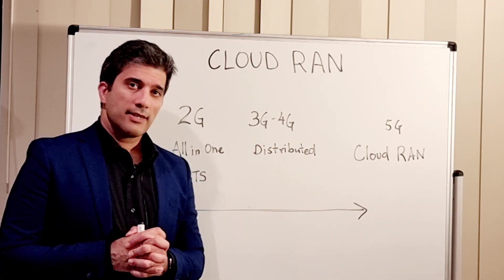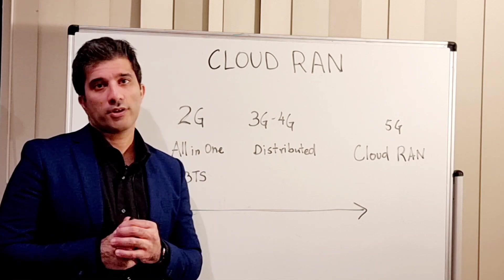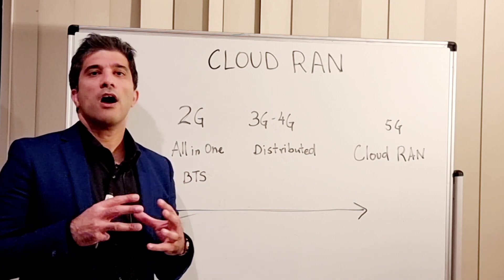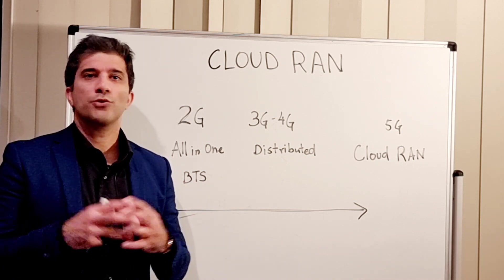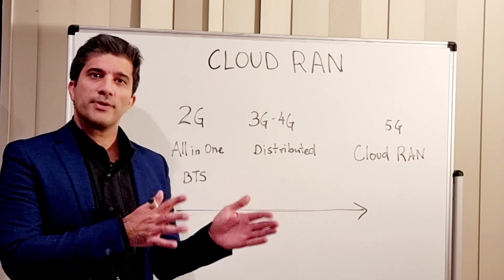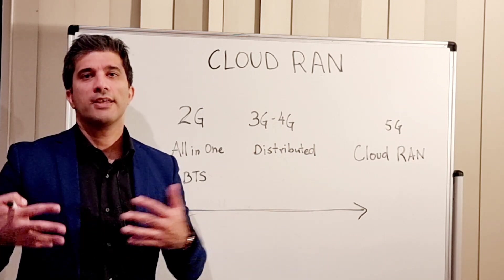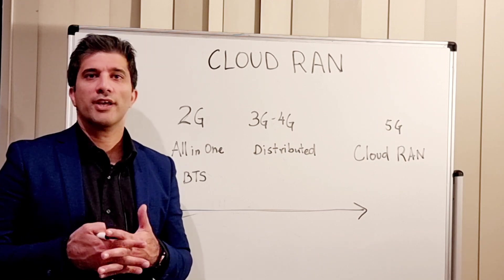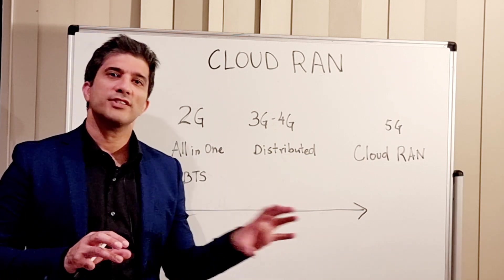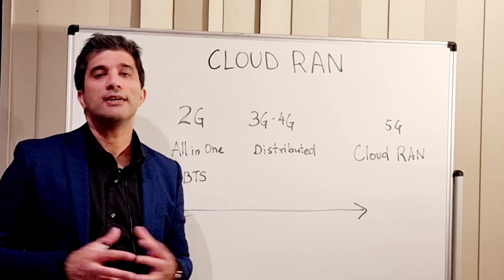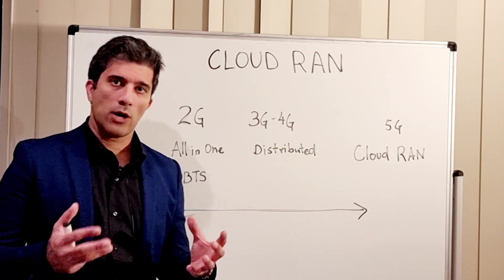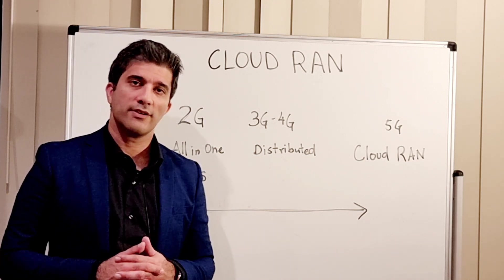Now we come to the concept of Cloud RAN. The most important thing to understand is that in those two previous stages — 2G and 3G/4G — the software and hardware were combined. You could not pull them apart; they were integrated with each other. You could not pull the software from one entity and put it onto an off-the-shelf processing equipment to make your digital unit.